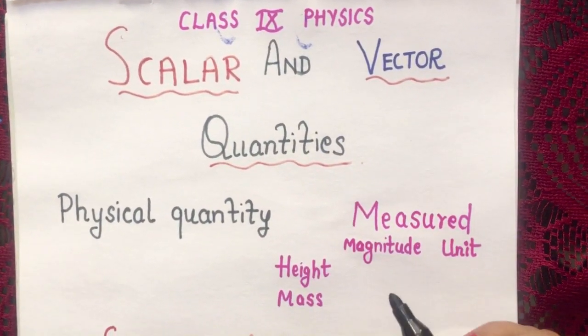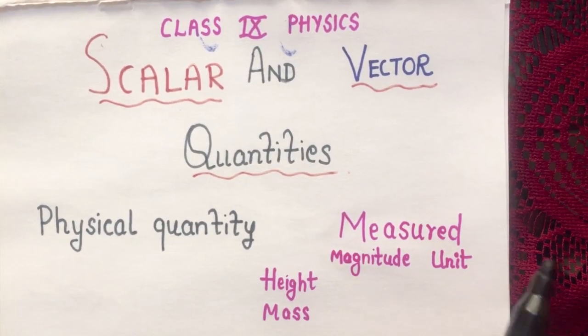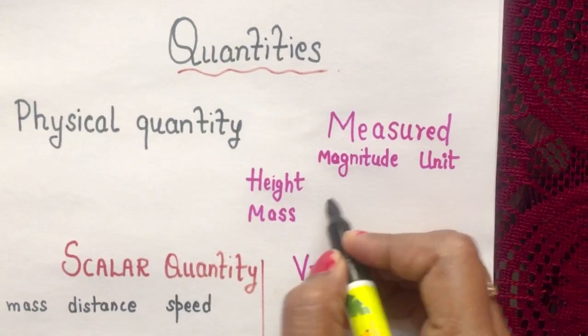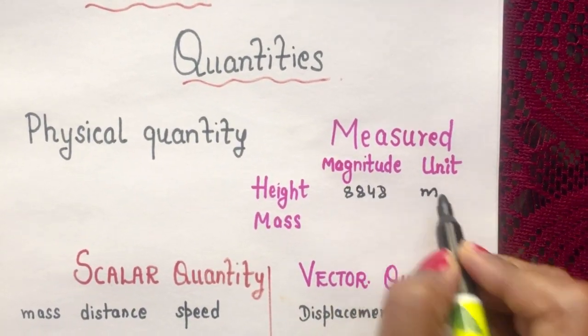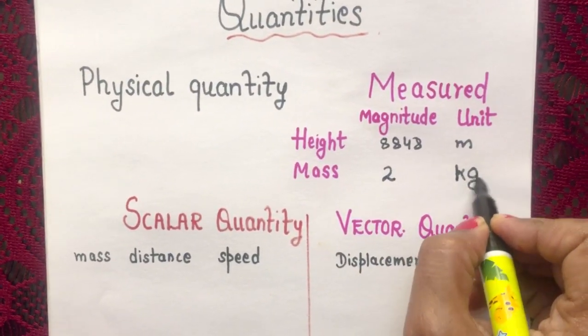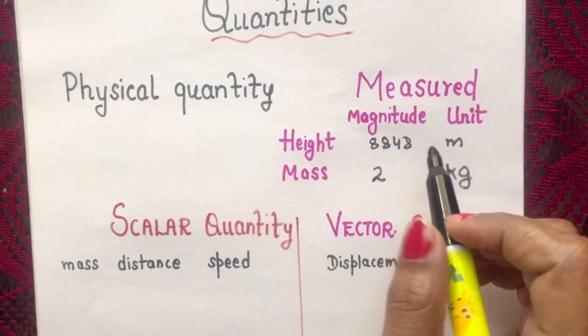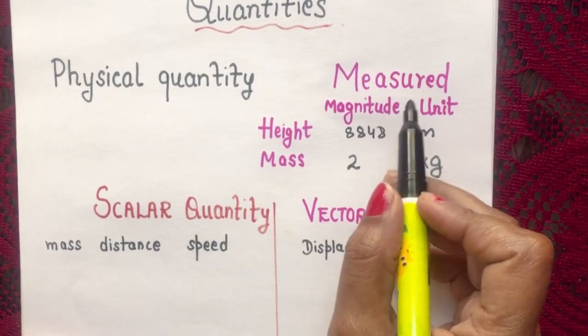So anything which can be measured is a physical quantity. For example, height of Mount Everest is 8848 meters. Mass of any object, say it can be 2 kg. So we can measure the height, we can measure mass in some units. So that is a physical quantity.